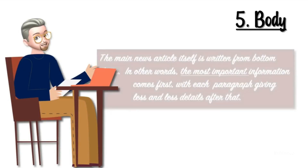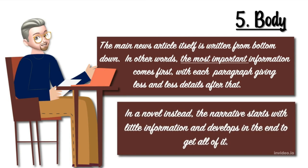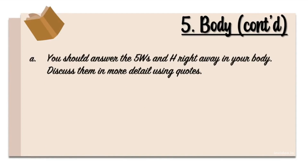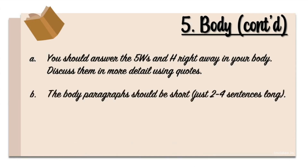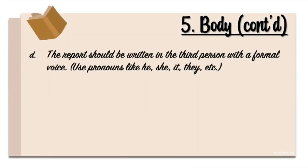Let's talk about the body. The main news article itself is written from the top down — in other words, the most important information comes first, with each paragraph giving less and less detail after that. In a novel, the narrative starts with little information and develops to reveal all of it at the end. You should answer the five W's and H right away in your body. Discuss them in more detail using quotes. The body paragraphs should be short, just two to four sentences long. The information reported has just happened, so do not explain the history of events that led up to the story being reported.